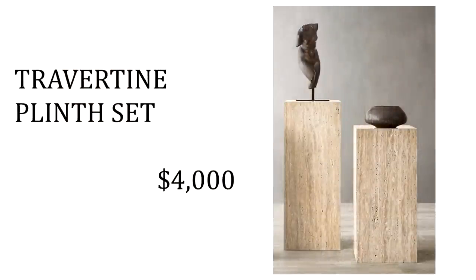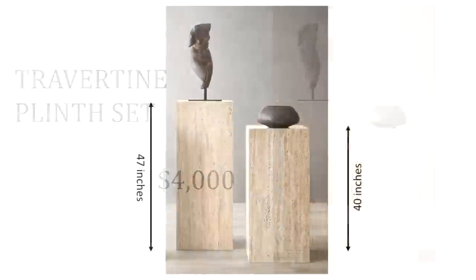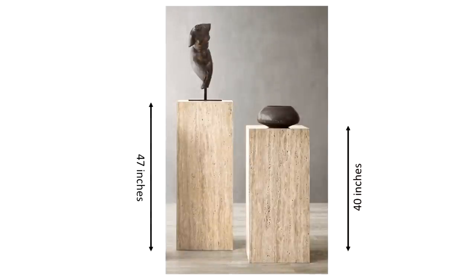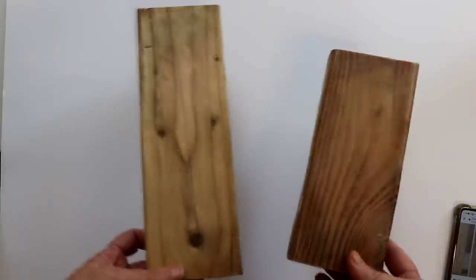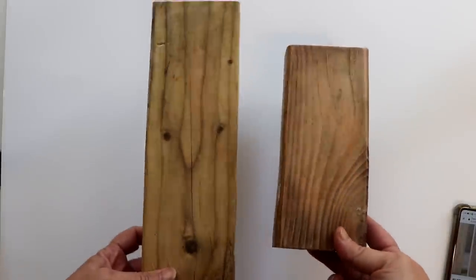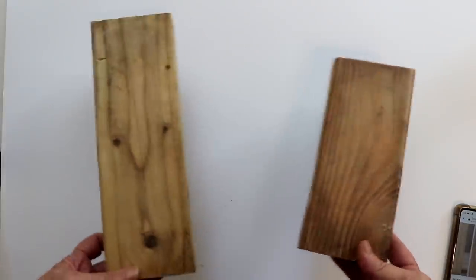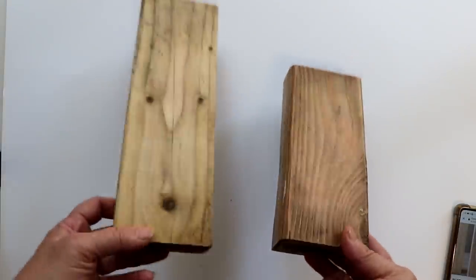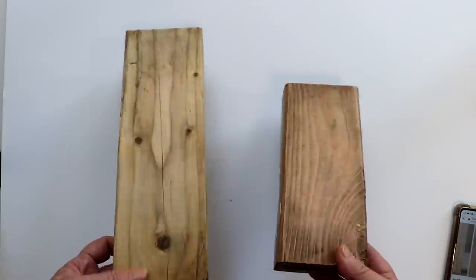For the next project, I'll be creating a dollar dupe of these travertine stone pillars Restoration Hardware refers to as plinths. These are large three and a half to almost four foot solid stone pillars and I'll be creating a faux travertine finish on much smaller pieces of wood. However, this finish can be easily replicated on larger pieces similar to the size of these. So I'm going to start with a couple of pieces of scrap 2x4s that have been sitting in my backyard, so they're pretty weather worn. That's okay since I'll be painting them anyway.